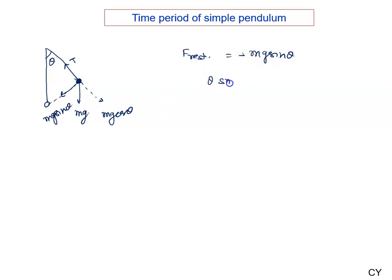Now, when we say θ is small, sin θ can be written as just θ, so F is given by minus mg θ.